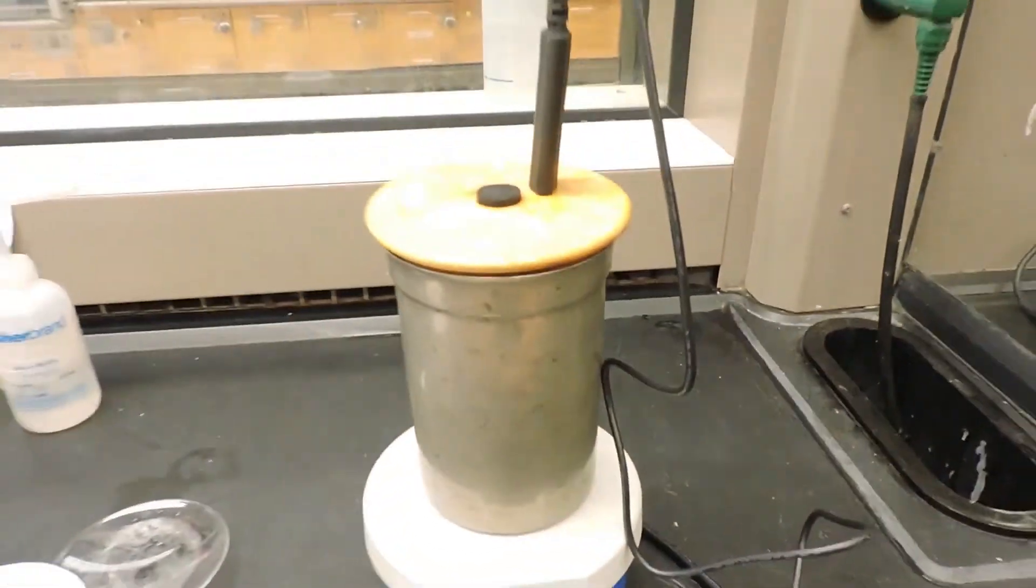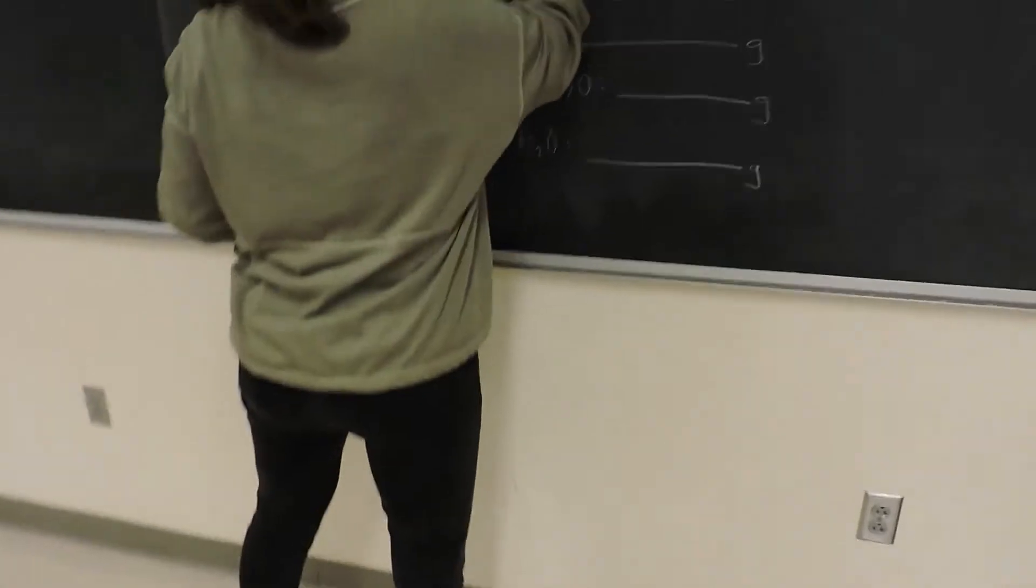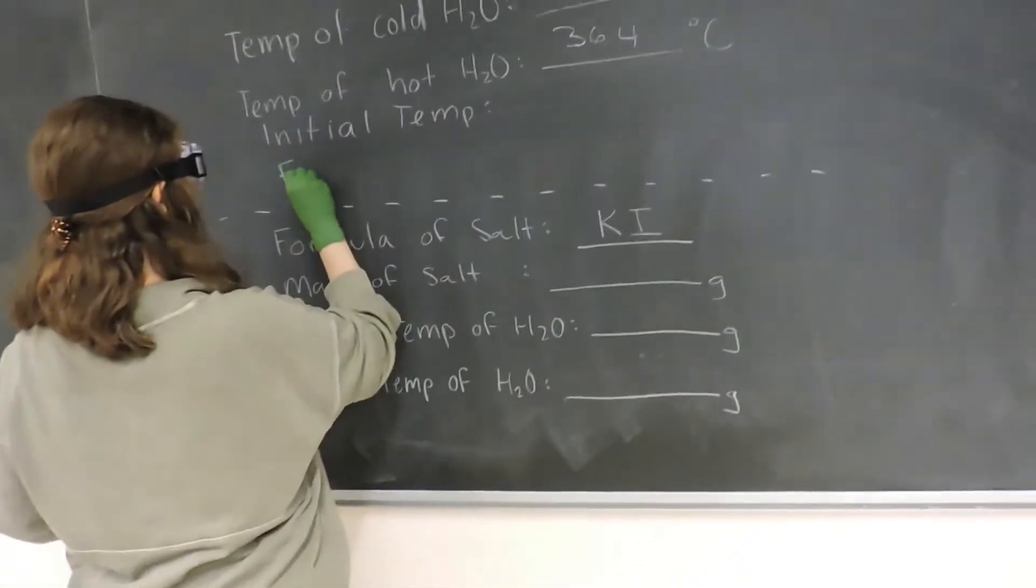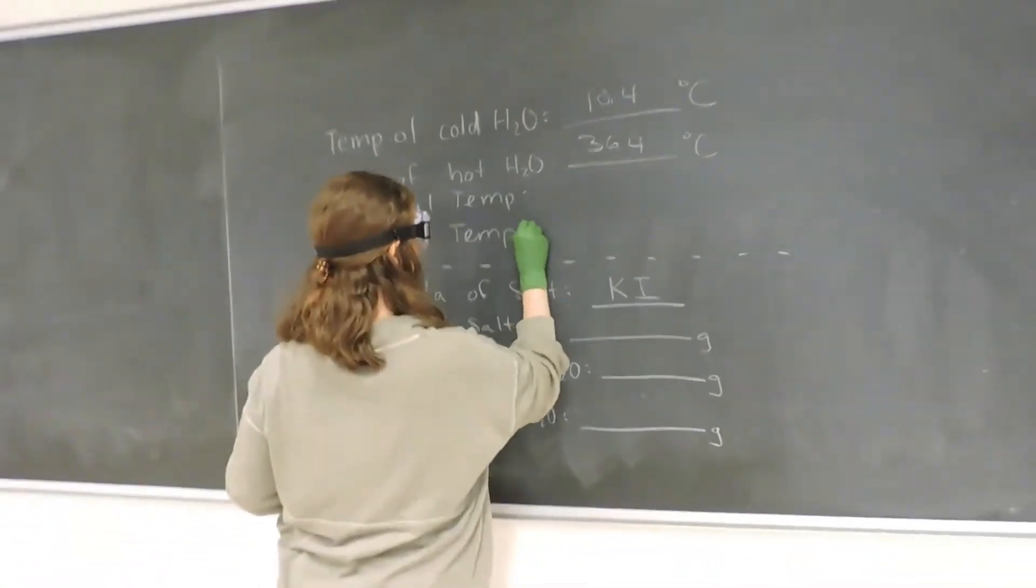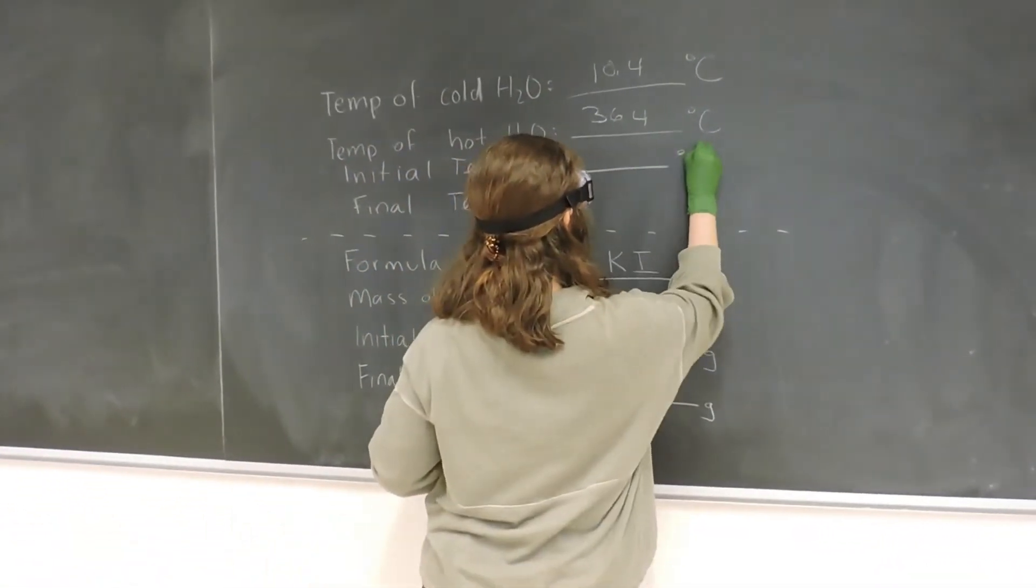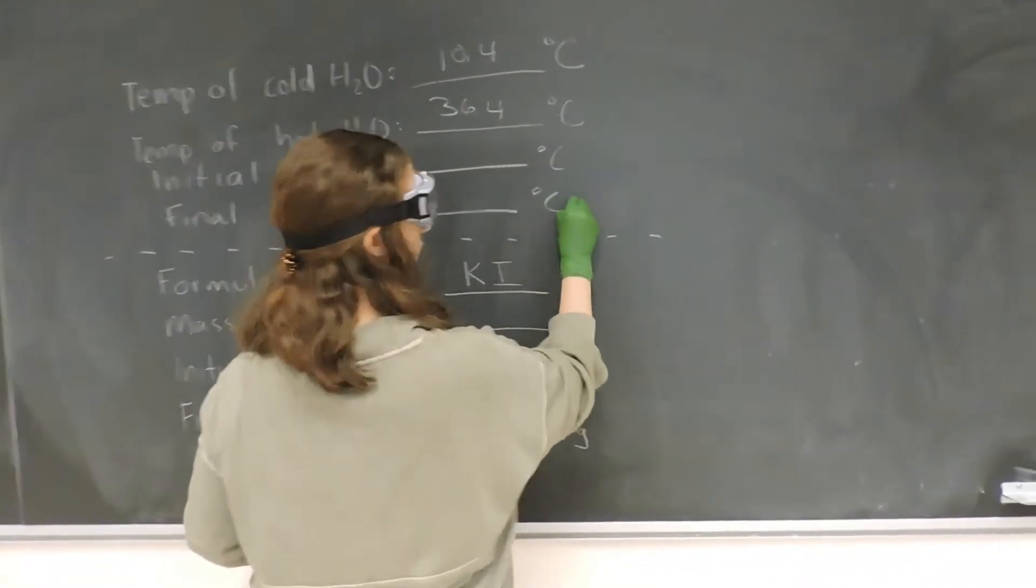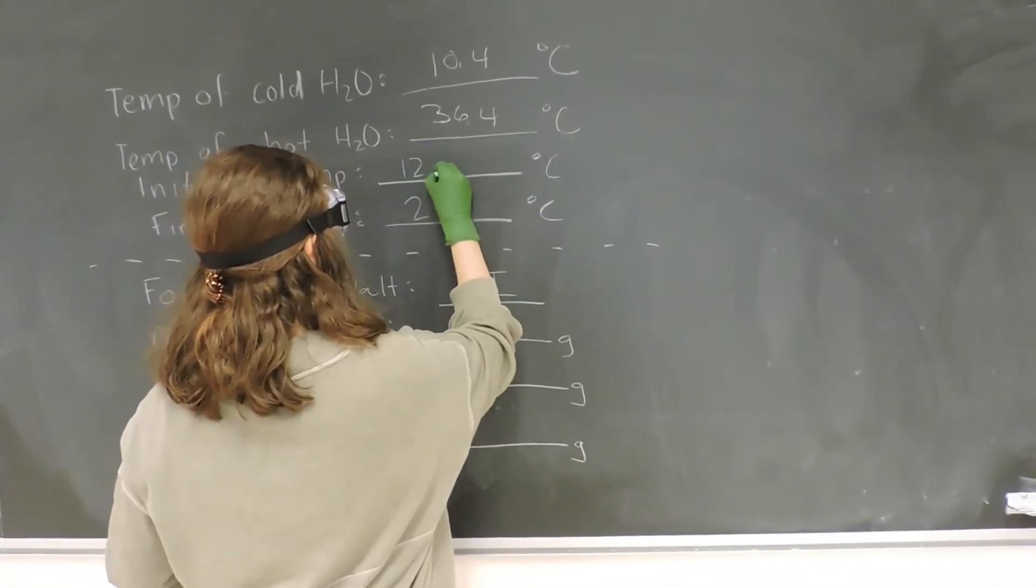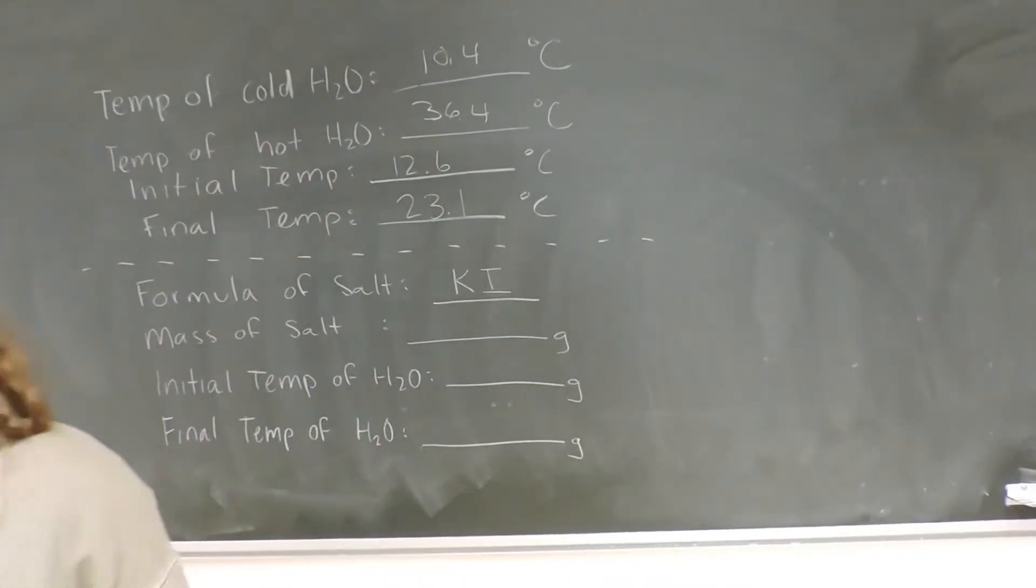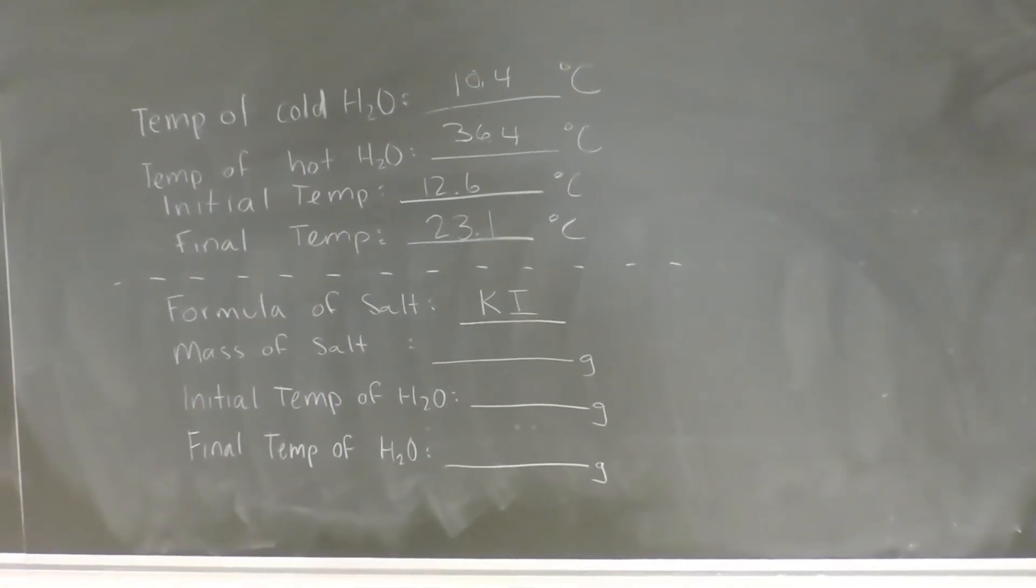Keep in mind that the calorimeter is stirring the entire time. So the final equilibrium temperature would be 23.1 degrees Celsius. And that's the entire collection.